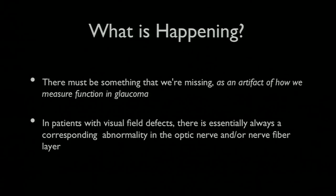So there must be something that we're missing, maybe as an artifact of how we measure visual function in glaucoma. In patients with visual field defects, there's almost always a corresponding abnormality in the optic nerve or the nerve fiber layer that we can detect. In fact, if I see a visual field defect and can't see a detectable abnormality in the optic nerve or in the nerve fiber layer, I start to wonder if that visual field defect is real. And if it is real, then is it really from glaucoma?